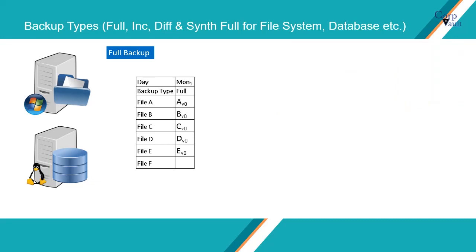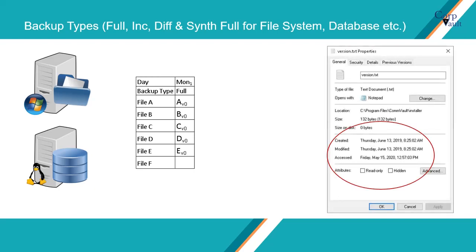The full backup becomes a baseline to which subsequent backup types are applied. In our example, it is version 0 of a file. If the file is changed, the version number of the file is changed for easy understanding. What contributes to the change of a file? It is usually the created, modified, accessed, and other attributes of the file, which can be seen from the file properties.